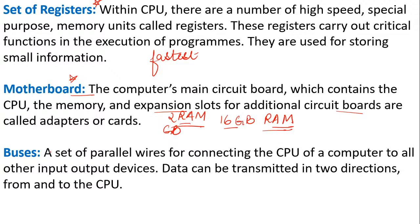Buses are like wires for connecting the computer to other devices. You might have heard of USB — USB stands for Universal Serial Bus. Registers are special memory with very high speed. Motherboard is the main circuit board where there is CPU, memory, all the extra RAM and ROM. Buses are just wires for connecting the computers — USB is Universal Serial Bus.